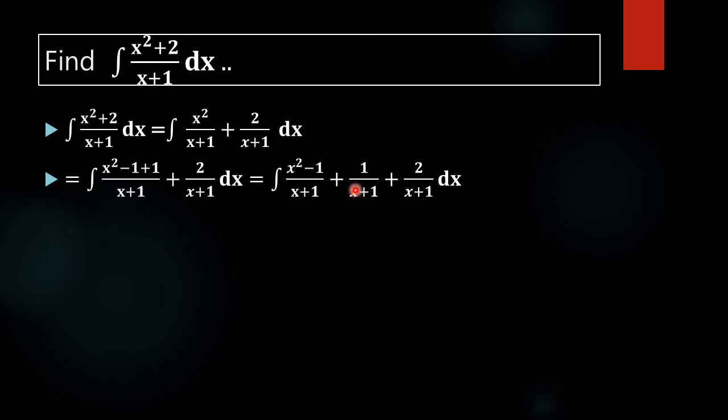Then what is 1 plus 2? Here the denominator is the same. So 1 plus 2 is 3. Again, integral of x squared minus 1 by x plus 1 dx plus integral of 3 by x plus 1 dx.